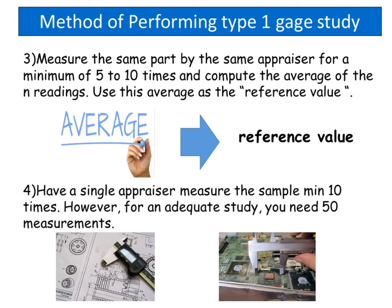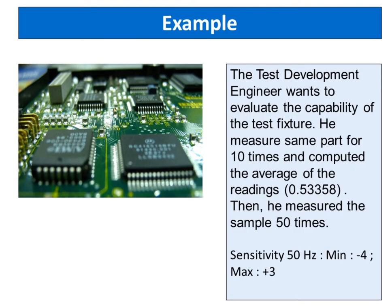Have a single appraiser measure the sample a minimum of 10 times. However, for an adequate study, you need 50 measurements. For example, a test development engineer wants to evaluate the capability of a test fixture. He measured the same part 10 times and computed the average of the readings: 0.53358. Then he measured the sample 50 times.